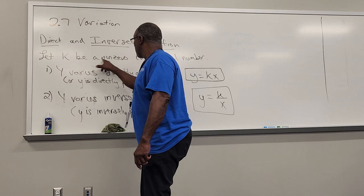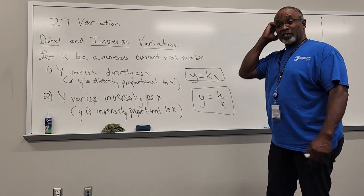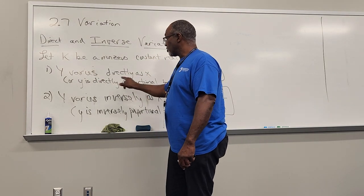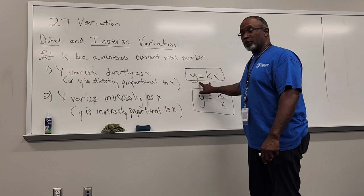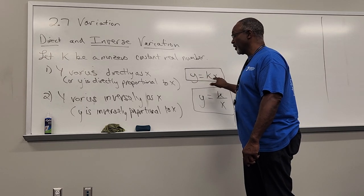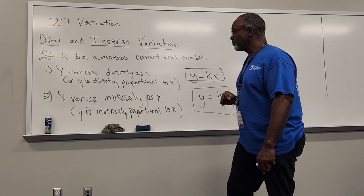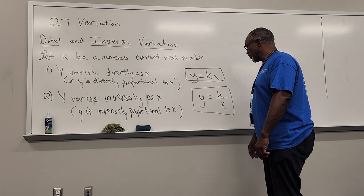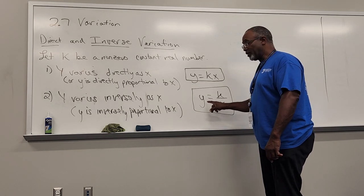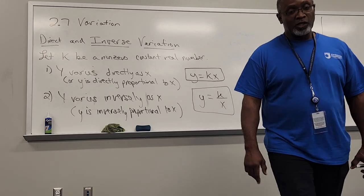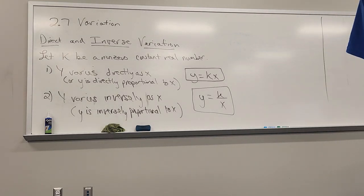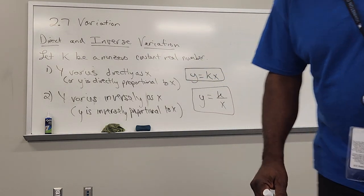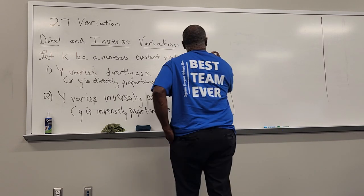Let k be a non-zero constant real number. You'll see this presented one of two ways: 'y varies directly as x' or 'y is directly proportional to x.' Either way, the relationship is y equals k times x. Alternatively, 'y varies inversely as x' or 'y is inversely proportional to x' means y equals k divided by x. That constant k is called the constant of variation.